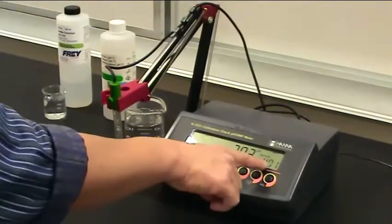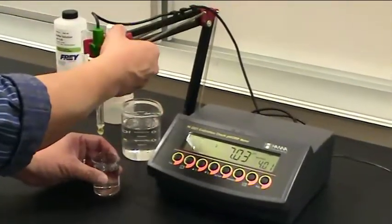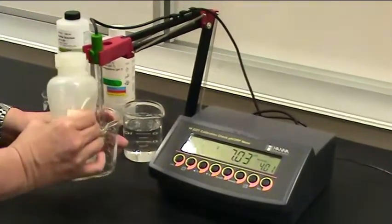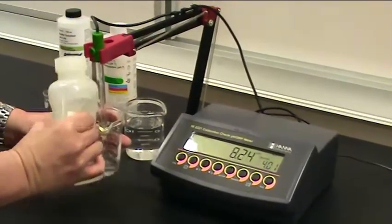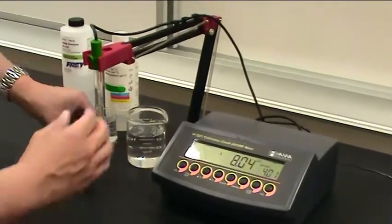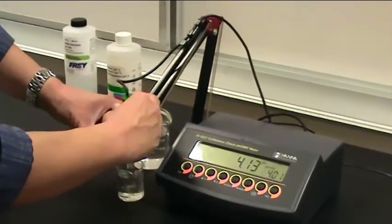Now you'll see that the buffer number changes to 4, and now you're going to switch over to the pH 4 buffer for referencing. So again, make sure you remember to rinse off the probe between solutions. And then go ahead and put the probe into pH 4 and let it equilibrate.